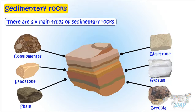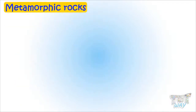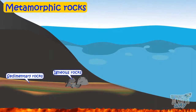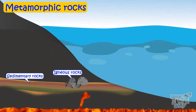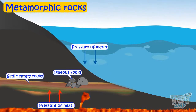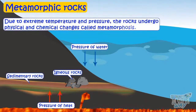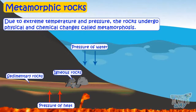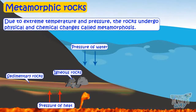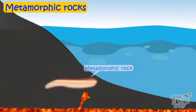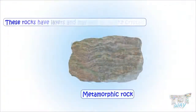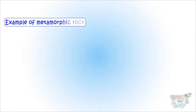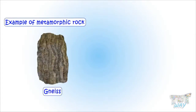Now let's learn another type of rocks called metamorphic rocks. Sometimes sedimentary rocks and igneous rocks are trapped at a great depth beneath the earth's surface where there is very high temperature and pressure. This extreme pressure and temperature make the rocks undergo physical and chemical changes called metamorphosis, and sedimentary or igneous rocks change to metamorphic rocks. These rocks have layers and may also shine like crystals. Examples of metamorphic rocks include gneiss and marble.